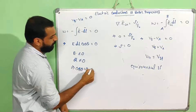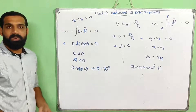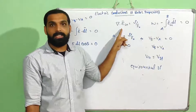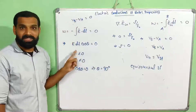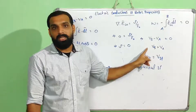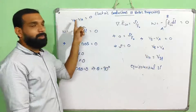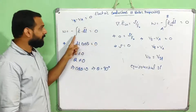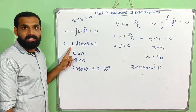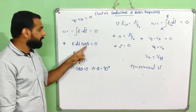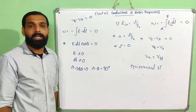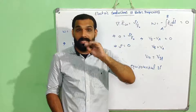Since integral E dot dL equals zero, this means cos theta equals zero, so theta equals 90 degrees. The angle between E and dL is 90 degrees. This means the electric field lines from the surface of the conductor are perpendicular to the surface. Outside the conductor, the electric field will be perpendicular to the surface of the conductor.